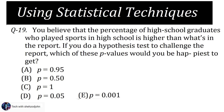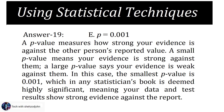Options: (A) p = 0.95, (B) p = 0.50, (C) p = 1, (D) p = 0.05, (E) p = 0.001. Answer 19: Choice E, p = 0.001. The p-value measures how strong your evidence is against the other person's reported value. A small p-value means your evidence is strong against them; a large p-value means your evidence is weak against them.